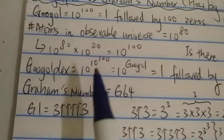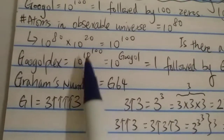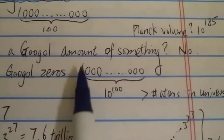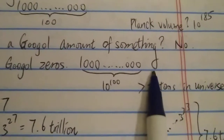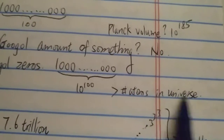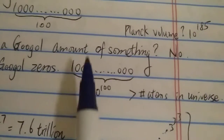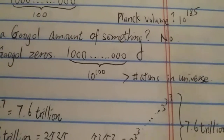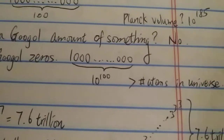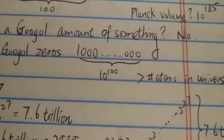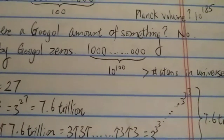How big is a Googolplex? Googolplex is 10 to the power of a Googol — so 10 to the 10 to the 100 — which is 1 followed by a Googol zeros. Since a Googol is more than the number of atoms in the universe, there are more zeros in a Googolplex than the number of atoms in the universe. Even if you wrote each zero on an atom, you would still run out of atoms.